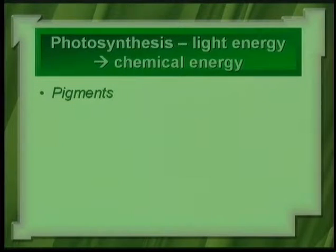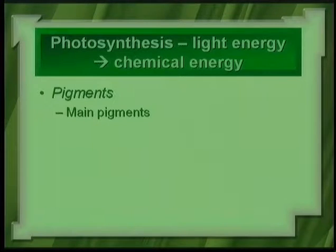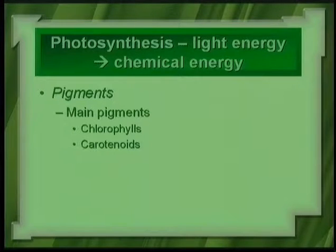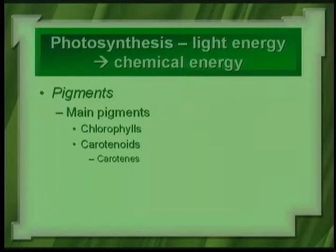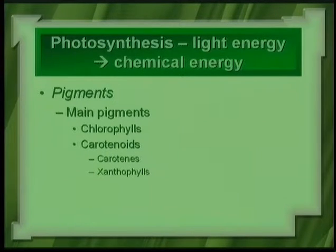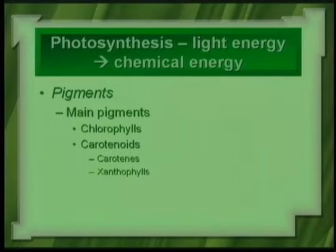So this is one reason why leaves are green — they reflect and transmit green and also a little bit of yellow. The main pigments in a green plant include the chlorophyll pigments — chlorophylls A and B — and also carotenoids. Carotenoids are responsible for pigment colors such as orange and red (carotenes) and also yellow and brown pigments (xanthophylls). Green plants have all these types of pigments — chlorophylls as well as carotenoids.